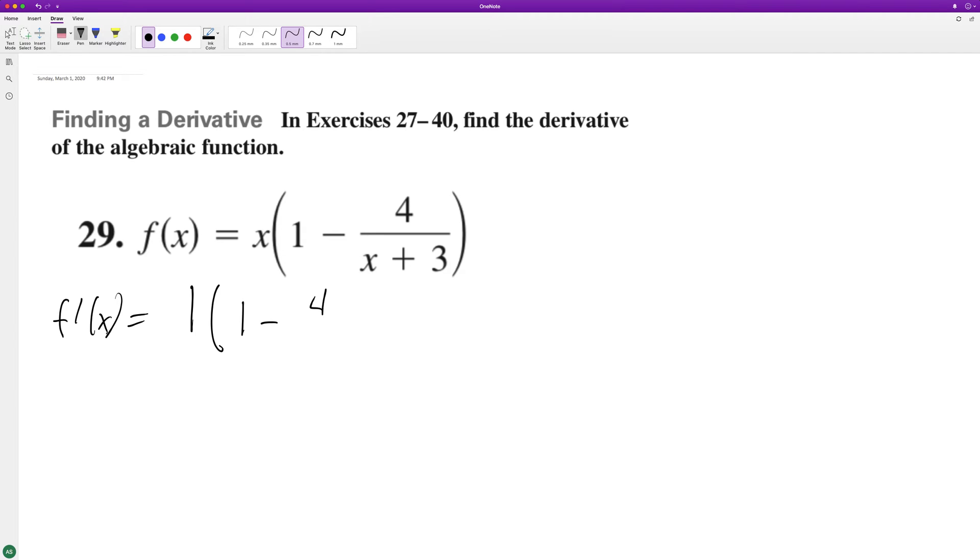And then one minus four over x plus three, and then plus x times the derivative of this, which is going to be equal to, well, it's like a quotient rule inside of here. So four over x plus three squared.